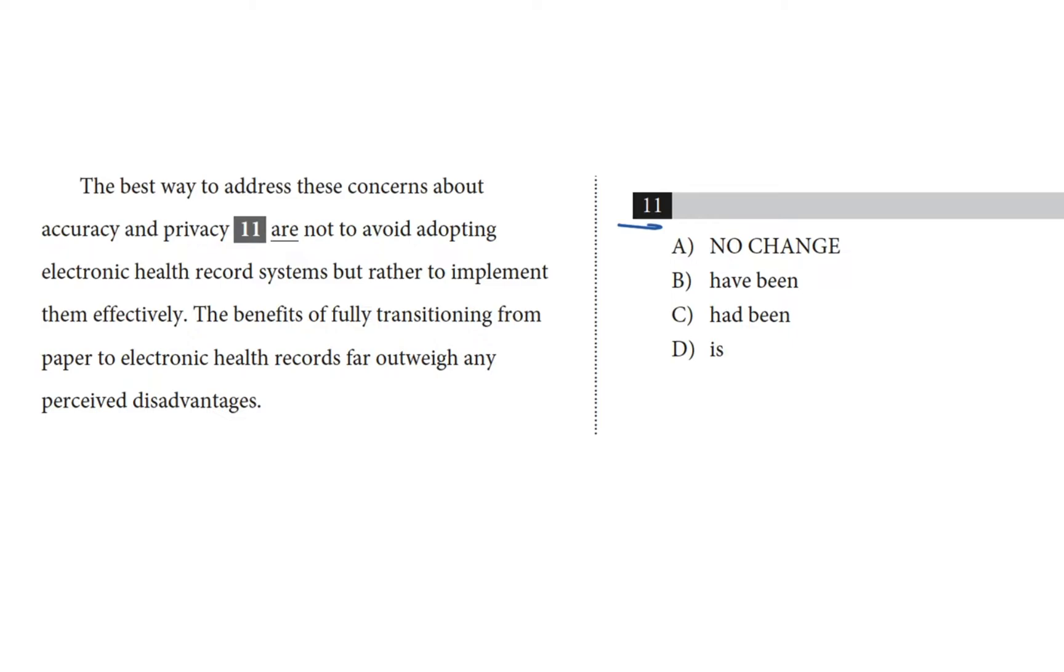The benefits of fully transitioning from paper to electronic health records far outweigh any perceived disadvantages. Our choices are this underlined thing, which is the no change option, are, and that's choice A. Choice B is have been, choice C is had been, and choice D is is.